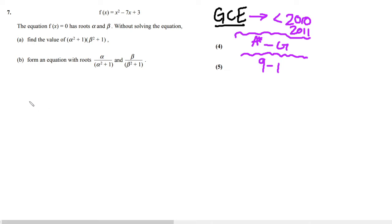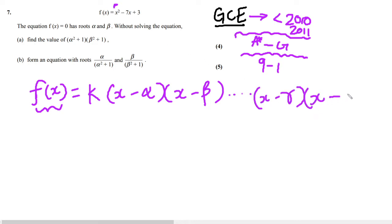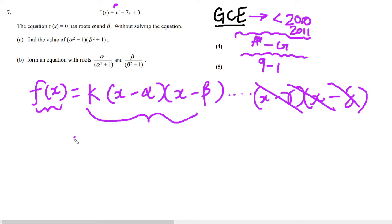Just to refresh you, the sum and root formulae for a quadratic equation: given that a quadratic f(x) can be expressed in the form — and this applies to pretty much any quadratic — f(x) = k(x − α)(x − β). If we had a higher degree polynomial, it would continue with x minus gamma, x minus delta, and so on. But here it's just a quadratic, where α and β are the roots.